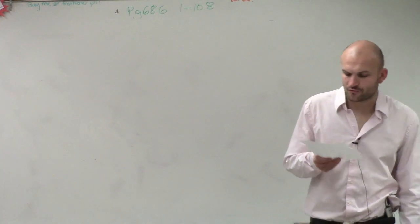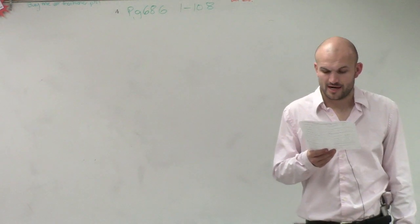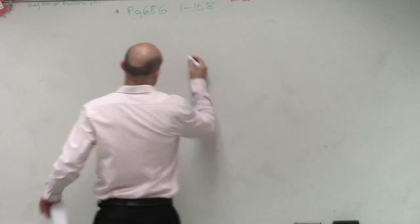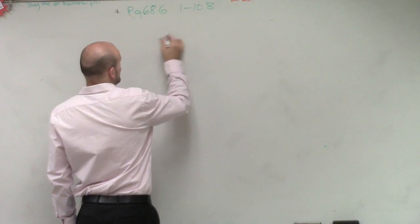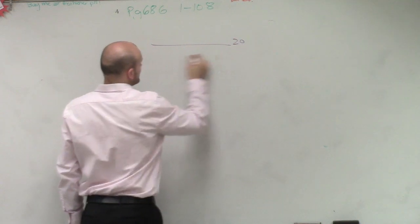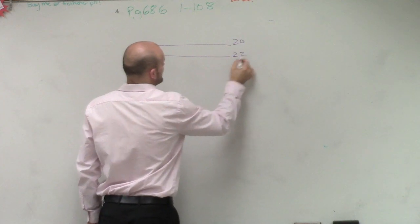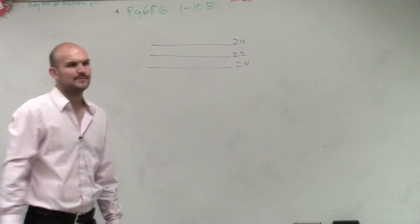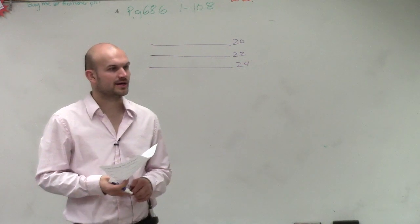It says an auditorium has 48 rows of seats. The first row has 20 seats. So let's go ahead and draft this up. We could say that first row has 20, the second row has 22, third row has 24, and it's just going to keep on getting larger and larger.